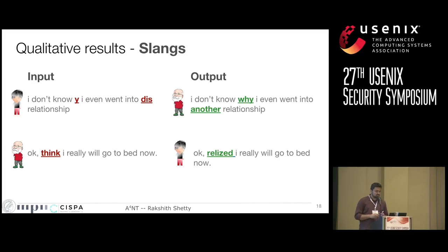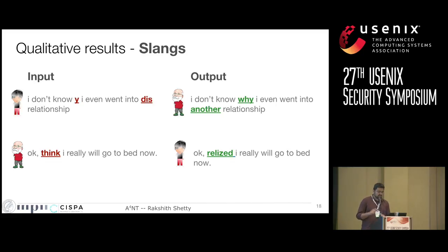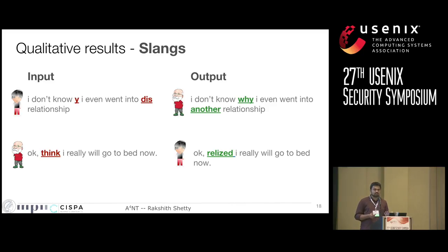The second class of transformations ANT learns are replacing slangs with proper English words and vice versa. When going from teenager to adult, it changes 'I don't know why why' to 'I don't know why I even went into another relationship,' replacing different spellings and slangs with proper English. When going from adult to teenager, 'okay think I really will go to bed now' becomes 'okay realized I really will' — with 'realized' appearing to be a slang spelling variant. These transformations would be hard to encode in a rule-based system because you'd need to enumerate all spelling variations and slangs in advance, but the system learned them from training data.